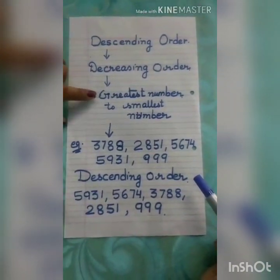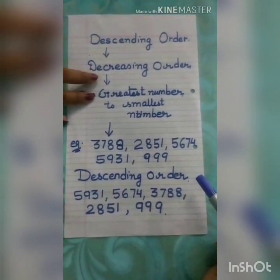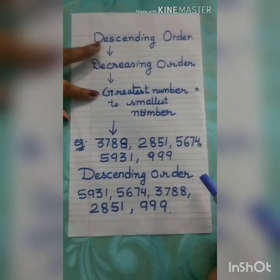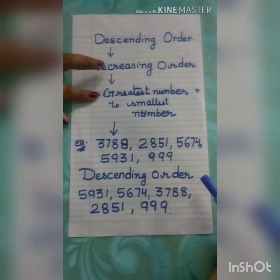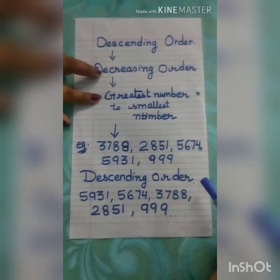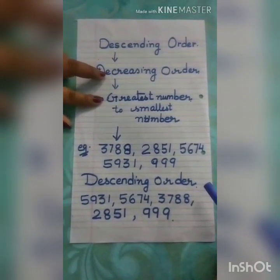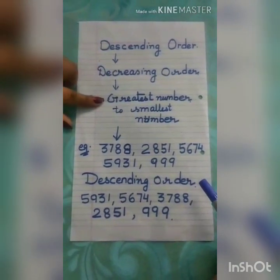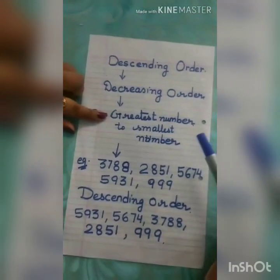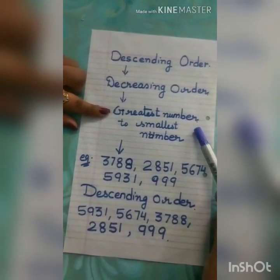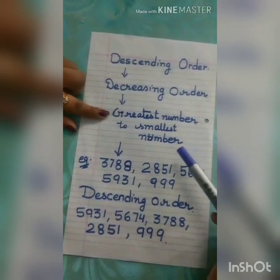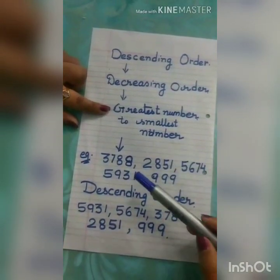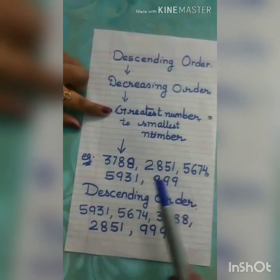Now our second topic is descending order. D for descending, D for decreasing. That means now we write the numbers in their decreasing order.